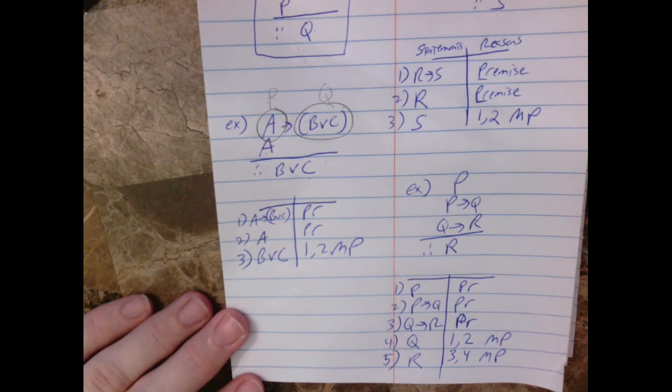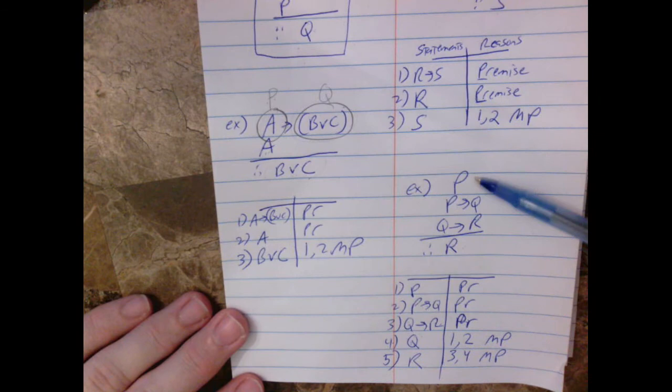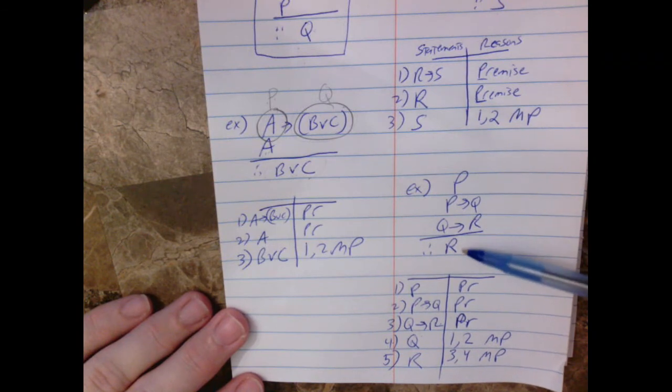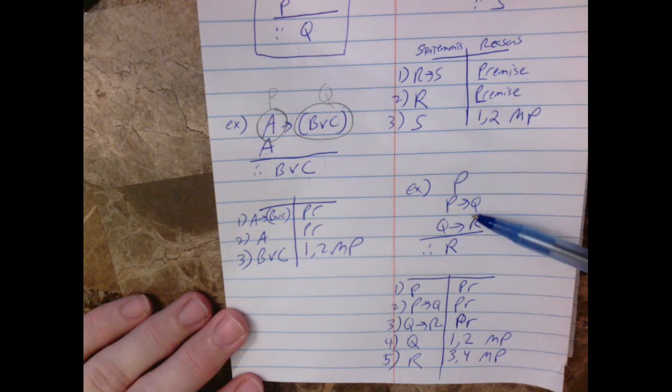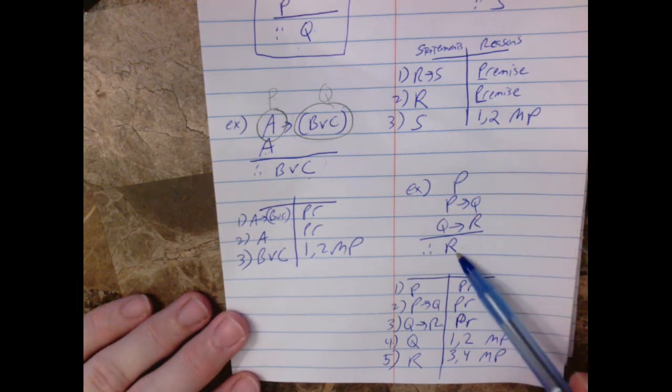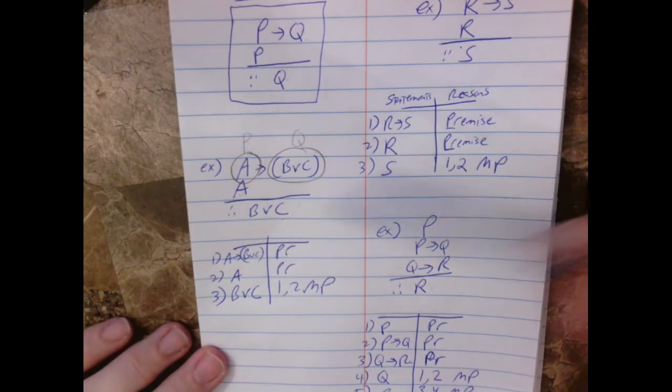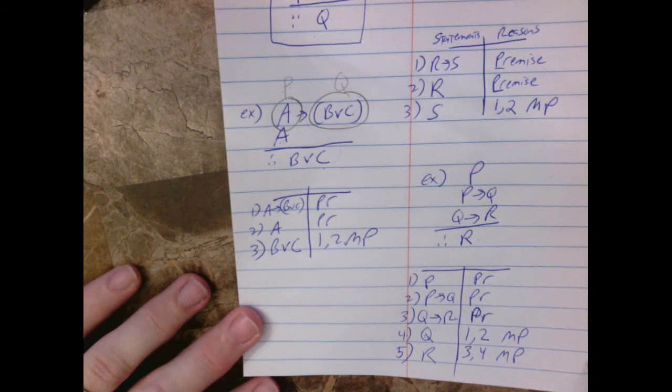Okay. So the key is to look at what's given, figure out what you're trying to prove, and then utilize whatever you can within what's given to come up with new things that will lead you to this conclusion. Sometimes it's relatively quick, if it's a more basic problem like these. And then sometimes it can get more complicated.